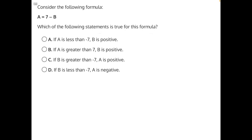Consider the following formula: A = 7 - B. Which of the following statements is true for this formula? To solve this question, it can be helpful to have the equation written both in terms of A, which is already given to us, and in terms of B, which we'll have to solve for.